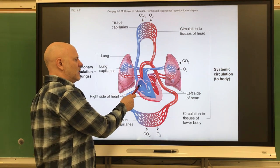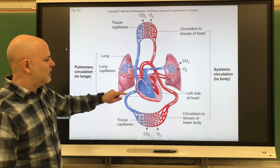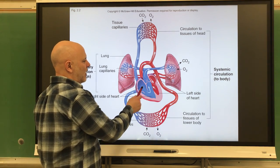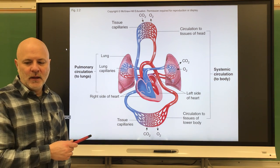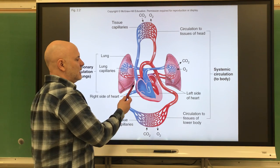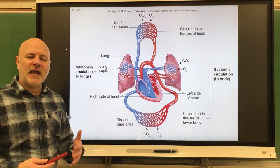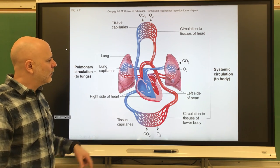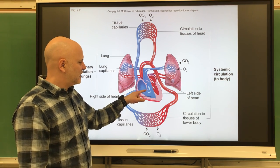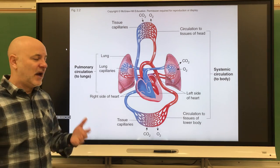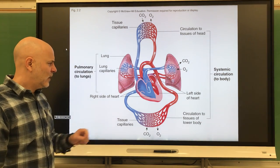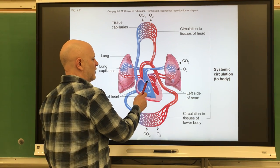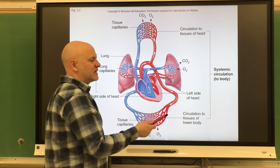Starting in the right atrium: blood enters from the superior and inferior vena cavae, and also from the cardiac veins. The right atrium has to be relaxed in order to fill with blood. This blood is low in oxygen and high in carbon dioxide because it just came from the body. When the atria fill, they push blood through the tricuspid valve into the right ventricle, which also has to be relaxed in order to fill.